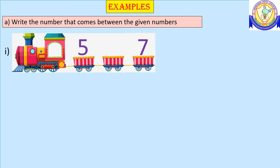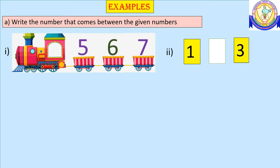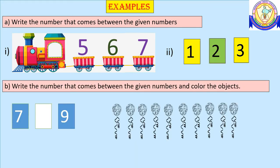Let's do some exercises. Write the number that comes between the given numbers. We can see the numbers five and seven. A number in between is the number that comes in the middle of two given numbers — hence we get number six. Here we can see the numbers one and three, and the number that comes in the middle is two.